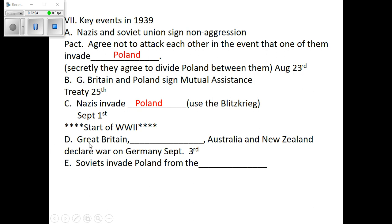Great Britain had spies and knew what Hitler was ready to do. So Great Britain declared war. The countries that declared war on Hitler were Great Britain, France, Australia, and New Zealand. The non-aggression pact with the Soviet Union would eventually backfire because Hitler was going to turn on the Soviet Union. And so off we go into World War II.